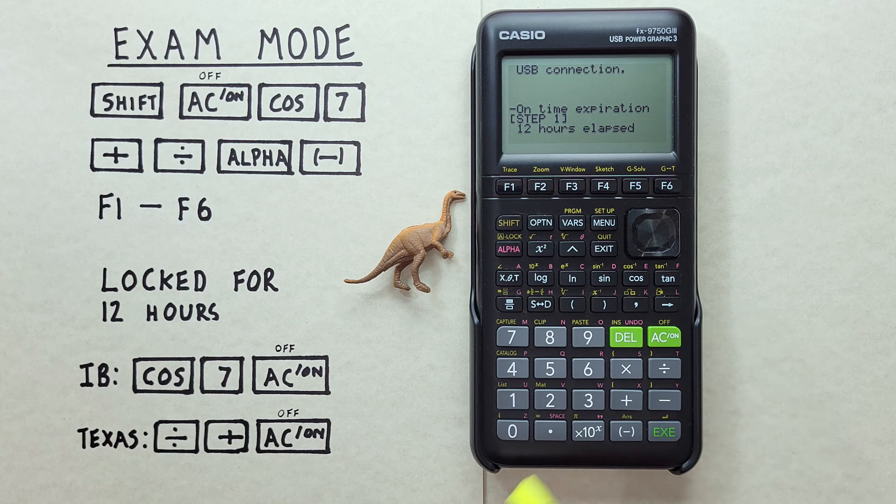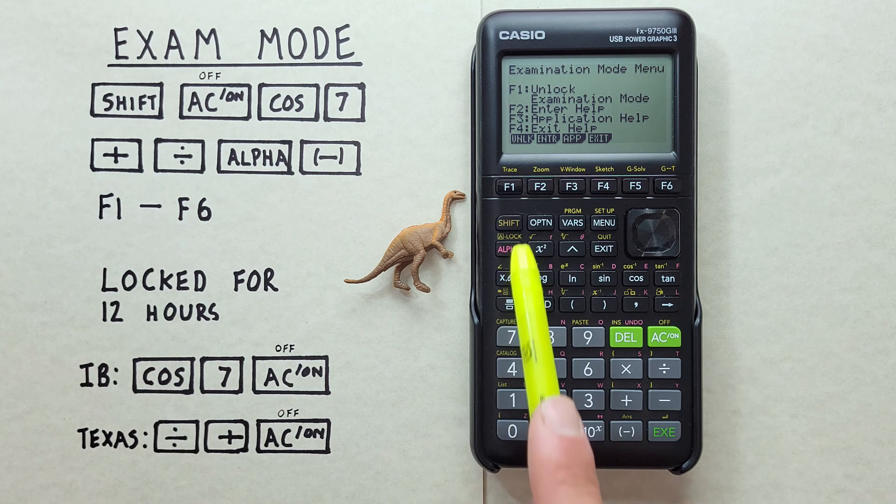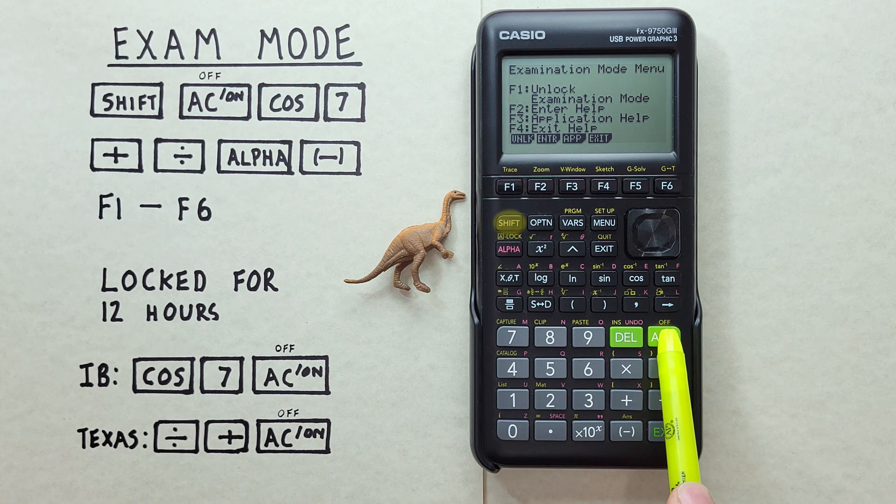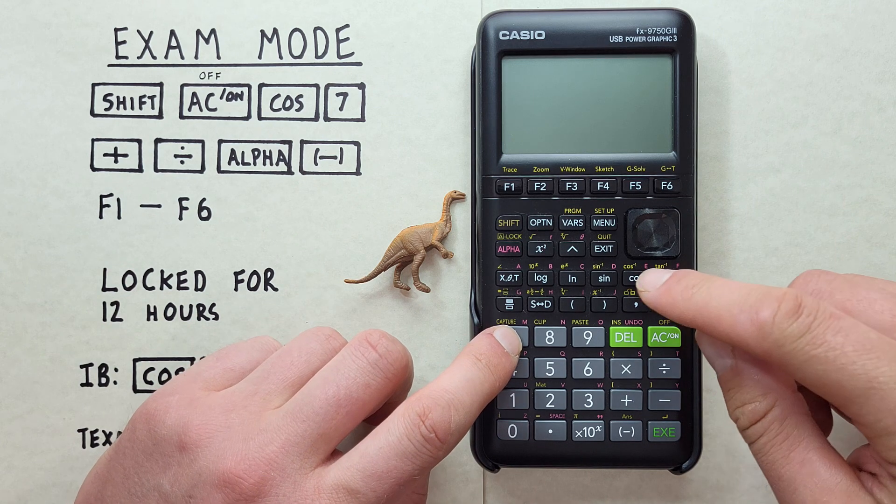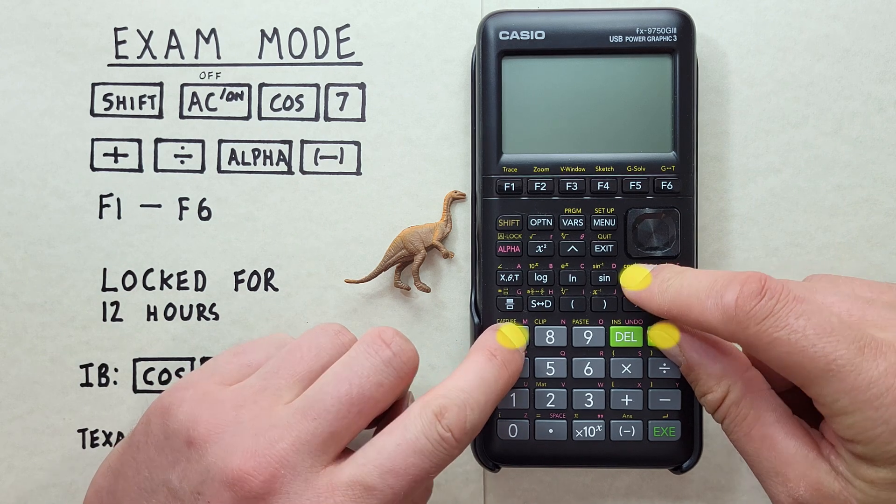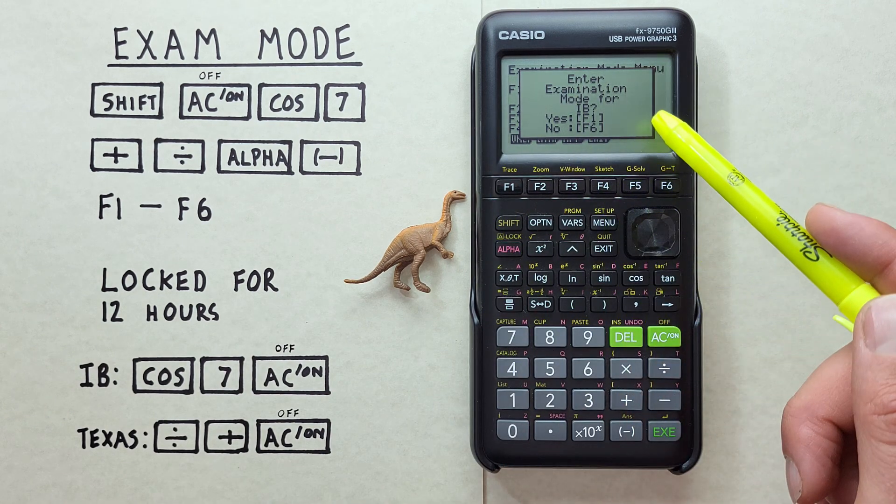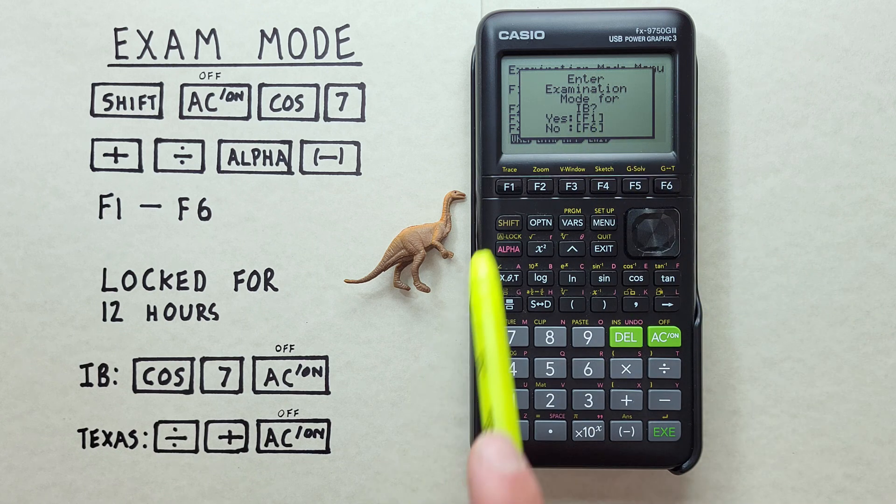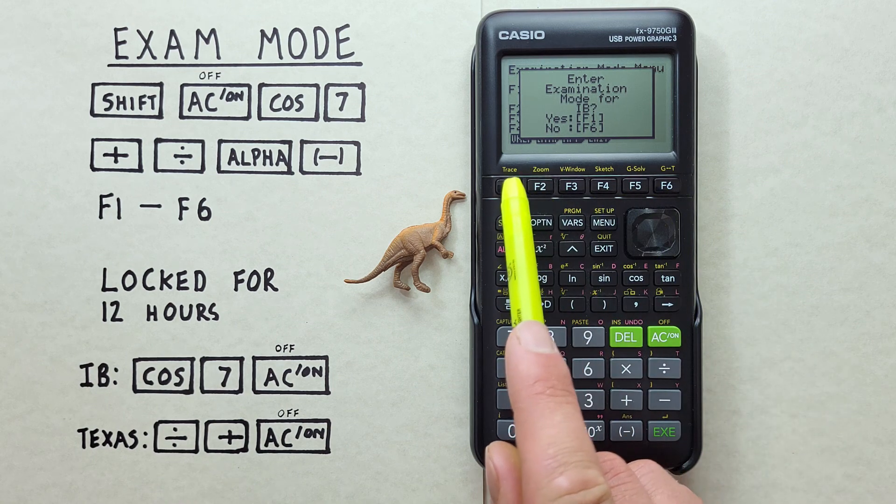Alright, let's try an example. Let's put our calculator into IB or International Baccalaureate exam mode. First, we have to turn it off. So we go Shift-AC. Our calculator turns off. And then we press and hold the 7 cos and AC keys. That makes this screen appear, where it asks us enter Exam Mode for IB. If we want to confirm, we hit F1. If we've made a mistake and want to back out, we can get back with F6. We want to go and do it, so let's hit F1.